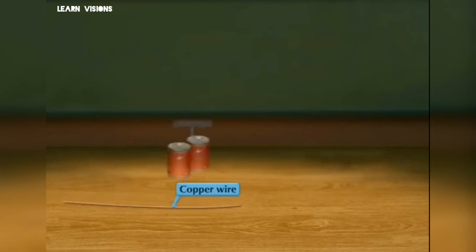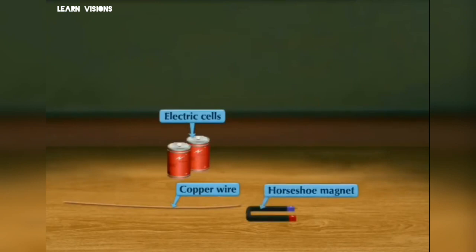We will need a thin copper wire, electric cells, a horseshoe magnet with a strong magnetic field, a plug key, connecting wires and a stand.